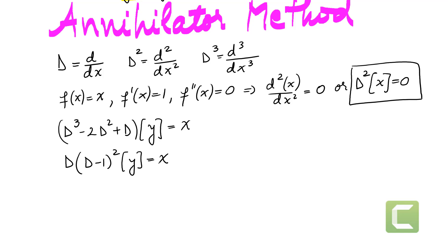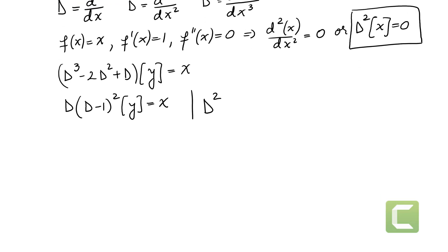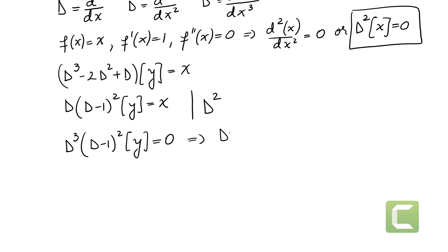Since D squared applied to x equals zero, we apply D squared to equation star. We get D cubed composed with (D minus 1) squared applied to y equals zero. We know how to solve this type of equation: it separates into D cubed applied to y equals zero and (D minus 1) squared applied to y equals zero.